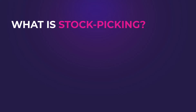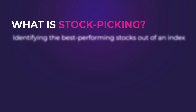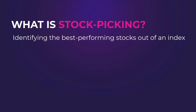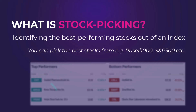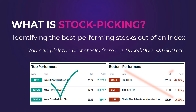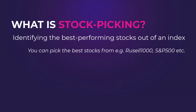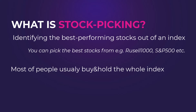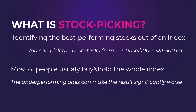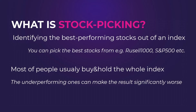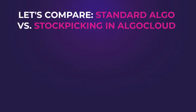So what exactly is stock picking? Well, as you might guess from the name, it's all about identifying the best performing stocks out of a large pool. For example, you can pick the best performing ones from 3,000 stocks of the Russell 3000 index. You've probably heard about trading the whole index like the S&P 500 or the Russell 3000. The thing is, when you buy an index you are getting a mix of stocks where some are rock stars but others are underperforming.